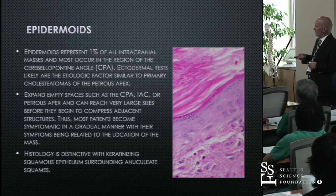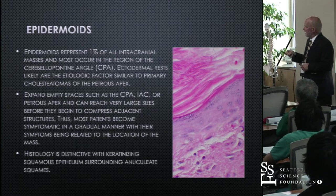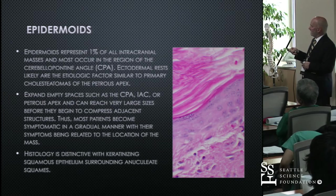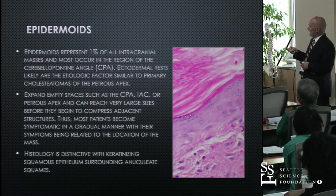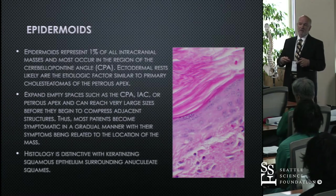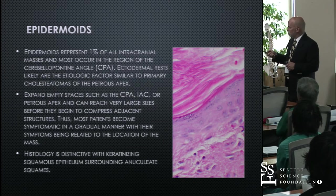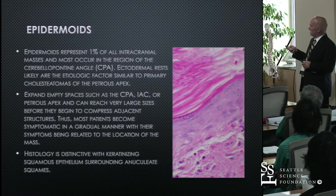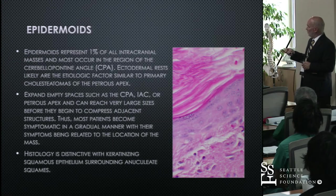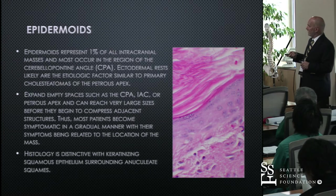Epidermoids need no introduction to this audience. They histologically appear as bland keratinizing squamous epithelium with keratohyalin granules and keratin material. This material of anucleate squames, when exposed to the host response, can cause a granulomatous inflammation which may be tumefactive in itself. Both the tumor and the keratin material can be tumefactive, especially when these recur.